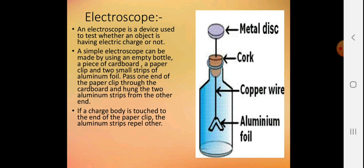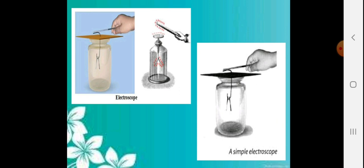A simple electroscope can be made using an empty bottle, a piece of cardboard, a paper clip, and two small strips of aluminum. Pass one end of the paper clip through the cardboard and hang two aluminum strips from the other end. If a charged body is touched to the end of the paper clip, the aluminum strips repel each other. This way you can find out whether the object you hold is carrying any charge or not.